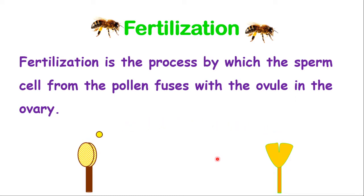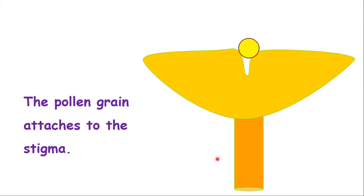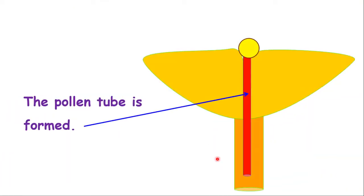Now let us talk about fertilization. Fertilization is a process by which a sperm cell from the pollen fuses with the ovule in the ovary. The demonstration at the bottom is for pollination, because fertilization comes after pollination. So before fertilization can take place, the pollen must be attached to the stigma, which is by pollination. Then after pollination, a pollen tube is formed and it extends from the stigma all the way down into the style.